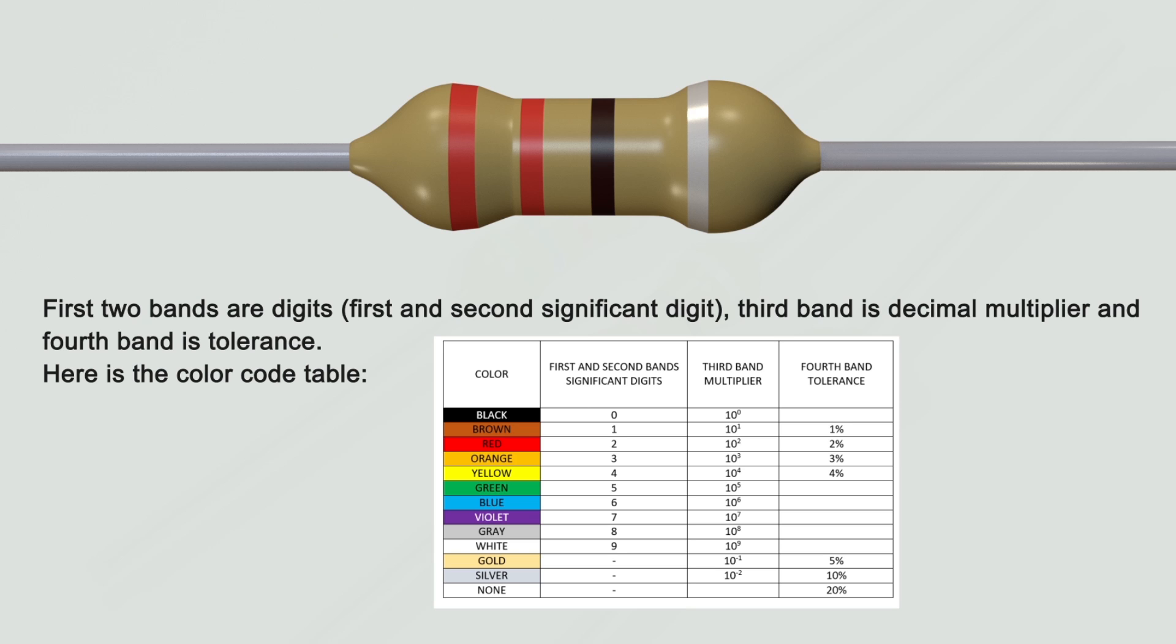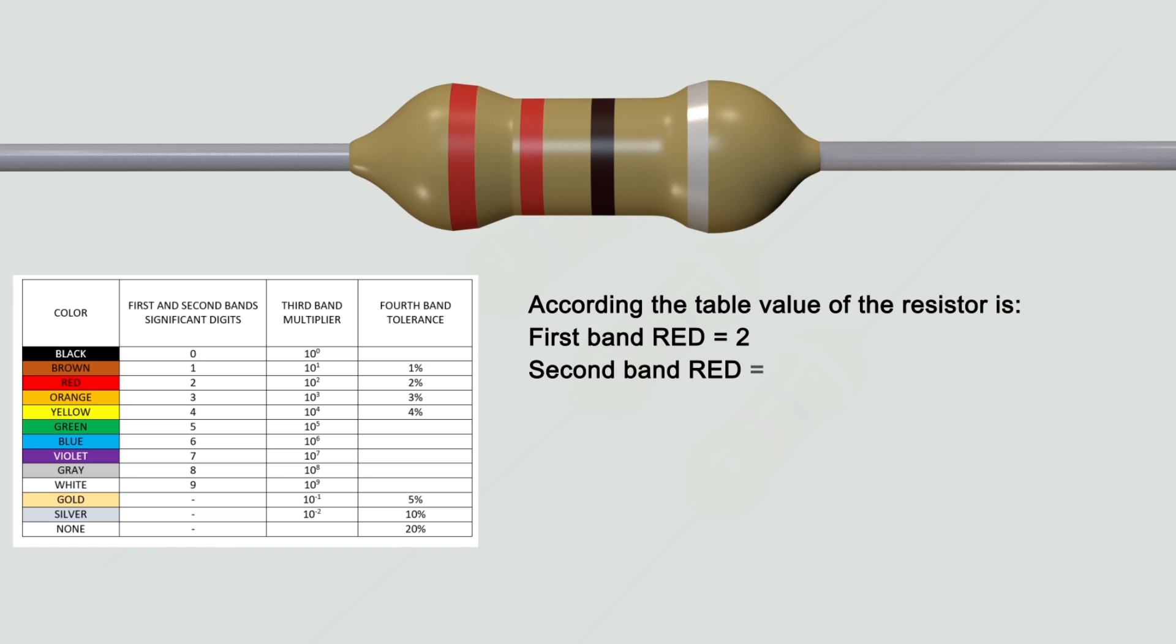Here is the color code table. According to the table, value of the resistor is: first band red equals 2, second band red equals 2, third band black equals 10^0 equals 1. Value is 22 times 1 equals 22 ohms.